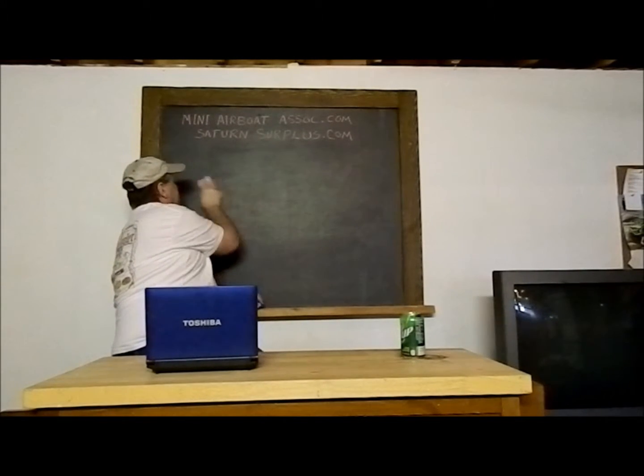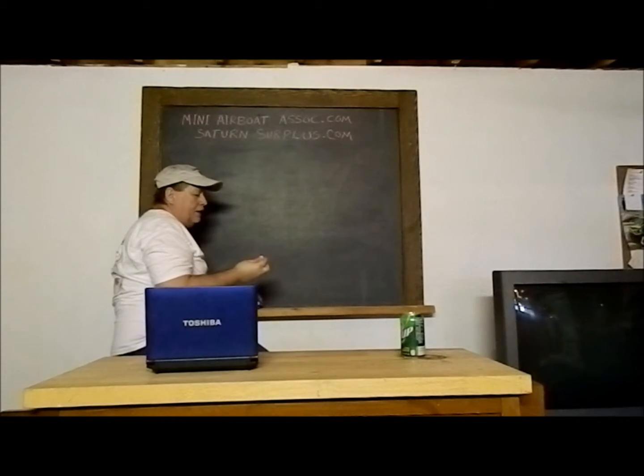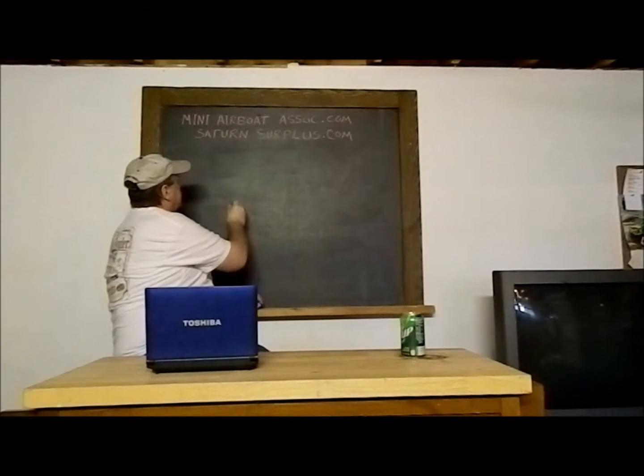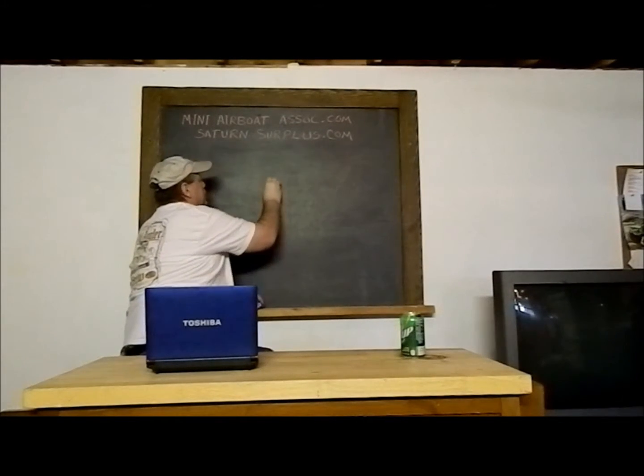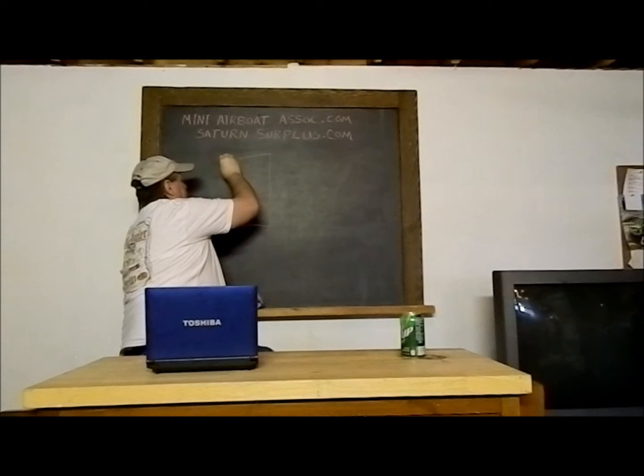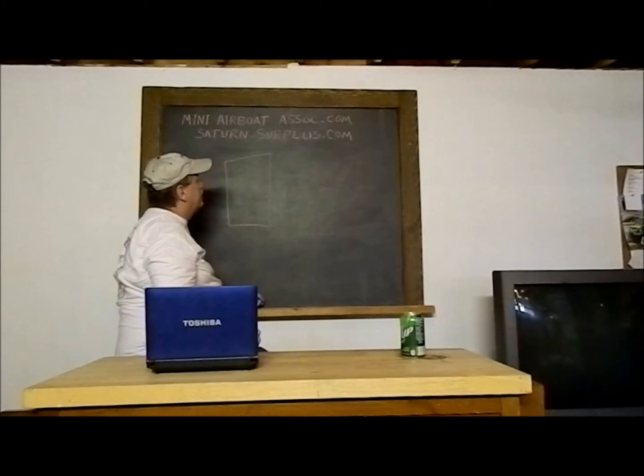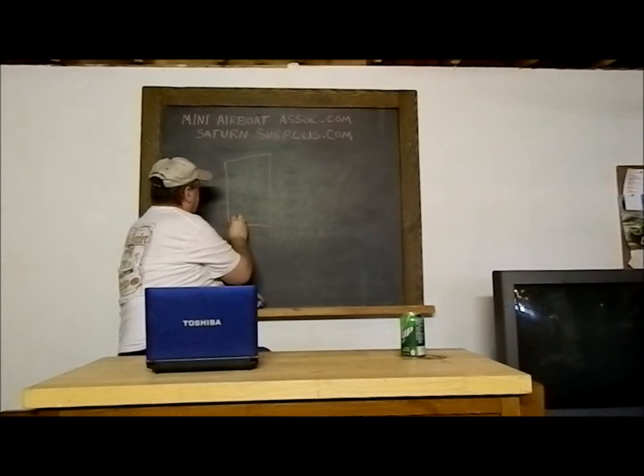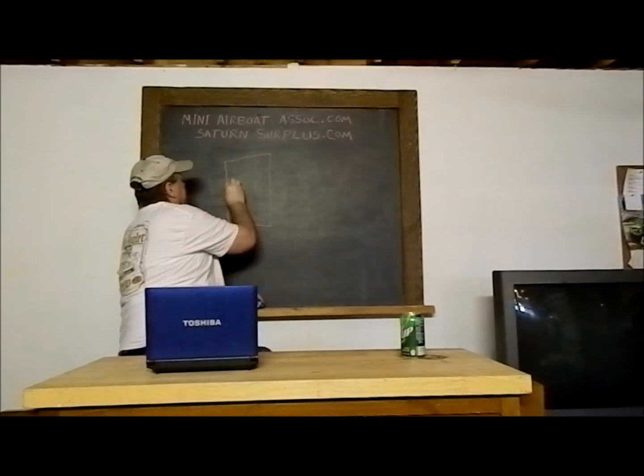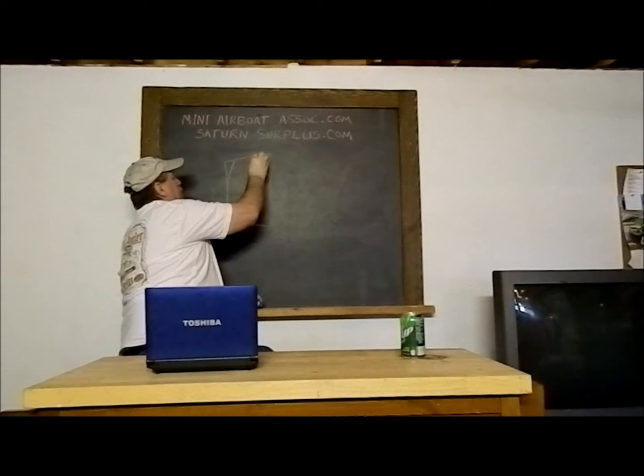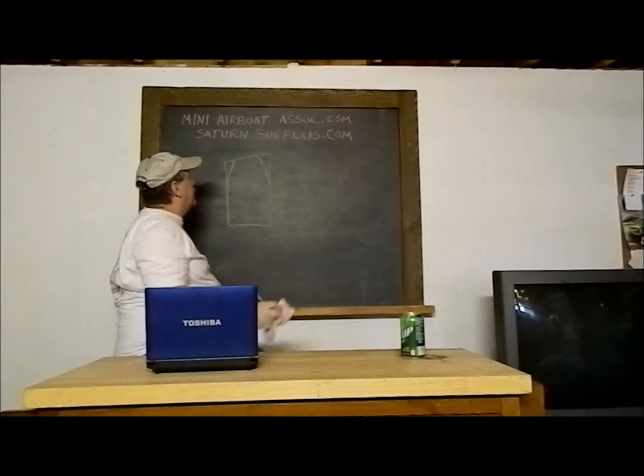The bottom of the boat: I use an eighth inch aluminum. The shape of the bottom is really up to you. Some people just make it a square. I like to bring the front in and have a narrower nose on.